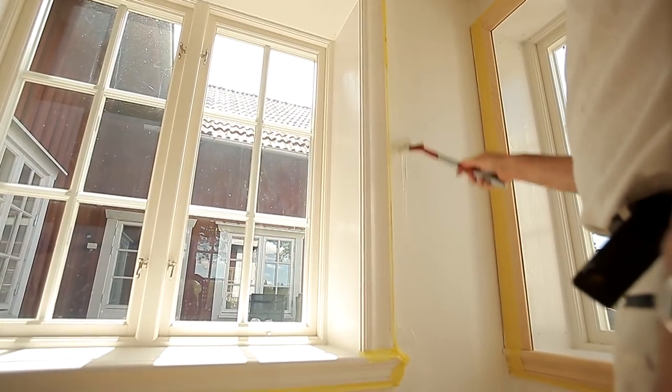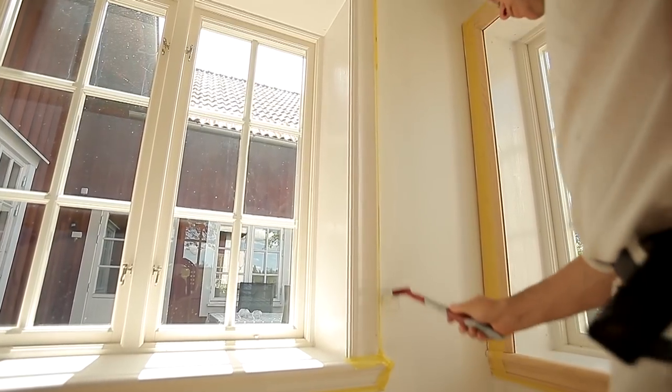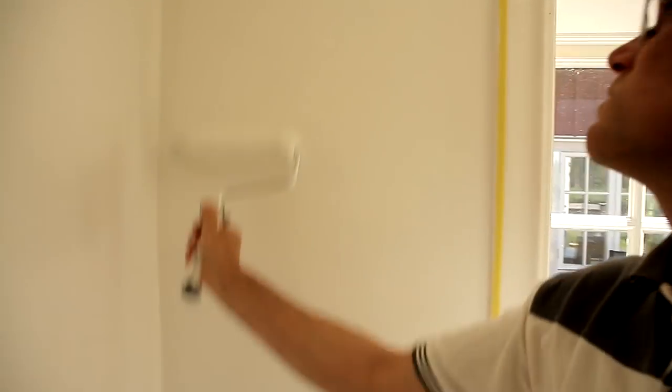When it is time for the second coat, follow the same steps as for the first coat. Make sure that the surface is even and that you don't leave too much paint when you finish with the roller.